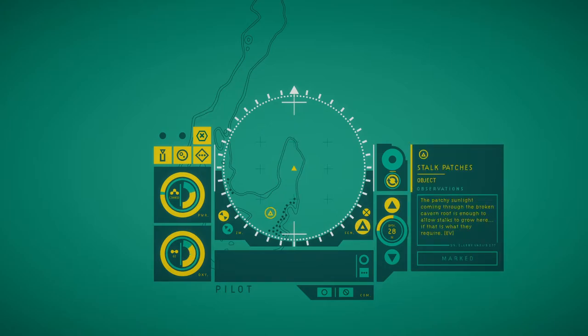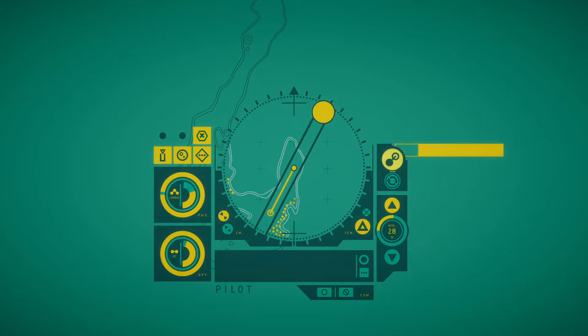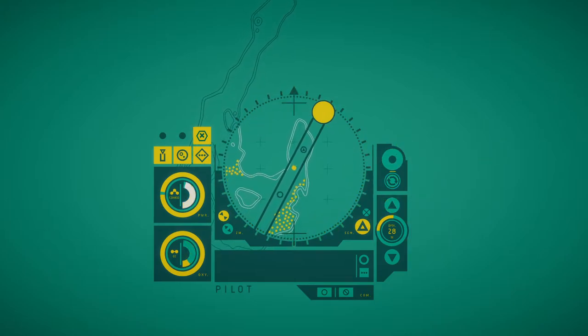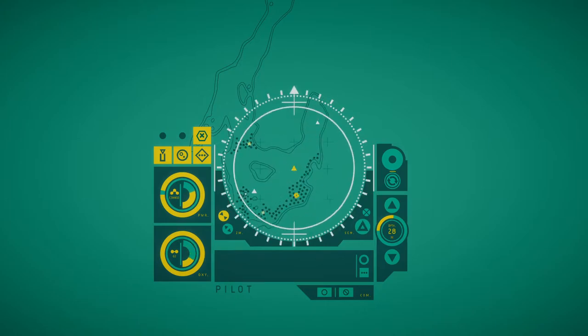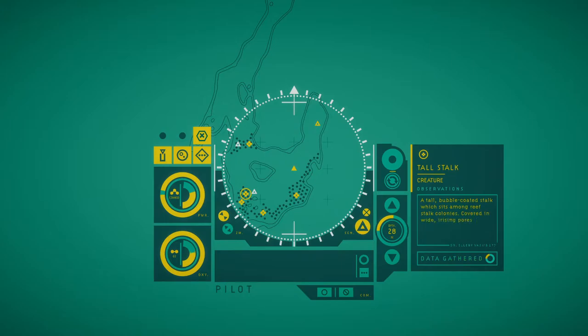The patchy sunlight coming through the broken cavern roof is enough to allow stalks to grow here, if that is what they require. A tall, bobble-coated stalk sits among reef-stalk colonies covered in white by rising bars. These tall stalks seem to tower over the small colonies.